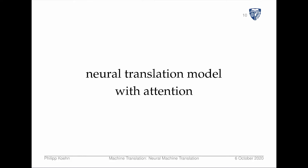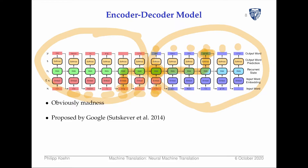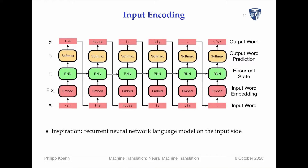Before we get to attention, let's look at the two big aspects of a neural translation model: the encoder and the decoder. Going back to the previous picture, the encoder is the part that encodes the input sentence and stores it in a state, then the decoder takes that state and produces a sentence from it. We're going to do this slightly differently now, but the idea of an encoder and decoder stays with us.